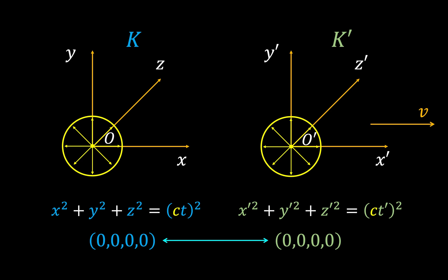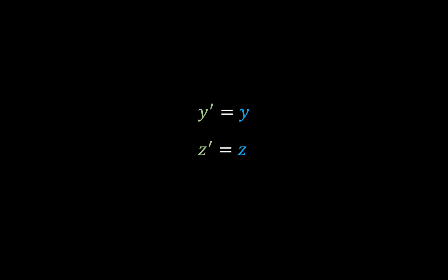It turns out, just given these conditions, we can work out what the transformation is. In this video I'll stick to the example where K' is purely moving in the x direction. In the next video I'll generalize this to the case where K' can move in any direction. First off, we know that the y and z coordinates just stay the same, since the motion of K' is purely in the x direction. In the y and z axes, the two coordinate systems are identical.